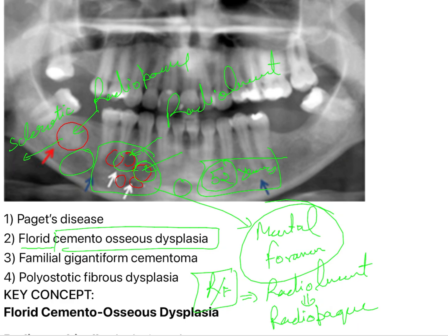These radiolucent areas are going to be filled by radio-opacities and will become radio-opaque in the long run. Due to the radio-opaque lesions, there will be poor vascular supply, and that makes the bone prone to infection.